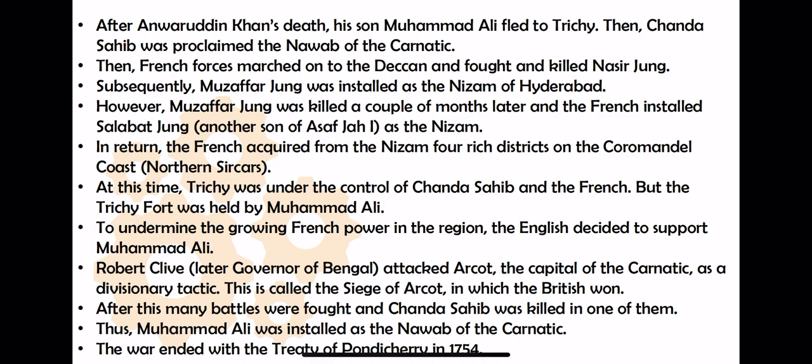Robert Clive saw that control was completely going into French hands and the British couldn't do anything. What Robert Clive did was he started supporting Mohammad Ali and attacked the French capital Arcot — known as the Siege of Arcot. It was a very tactical attack. As a result, Arcot fell and Chanda Sahib was killed. Mohammad Ali became the king, supported by the British. So control of Karnatic went into British hands, and it was evident that Nizam's control would also shift to the British.